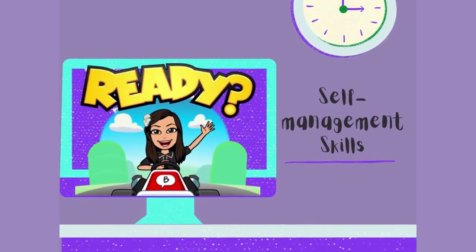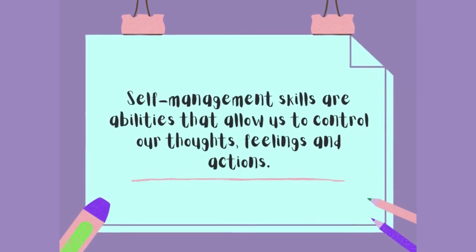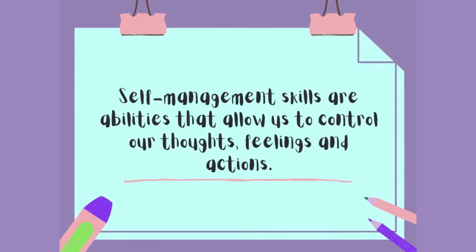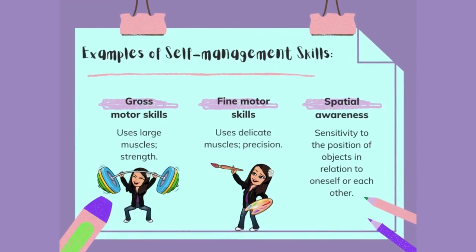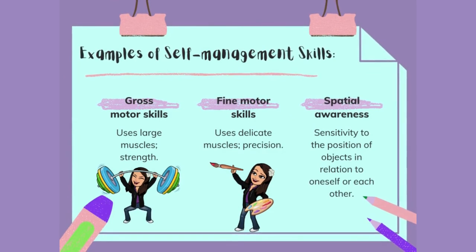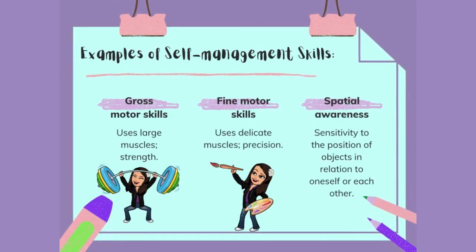Self-management skills are abilities that allow us to control our thoughts, our feelings, and our actions. Examples of self-management skills include gross motor skills, in which we use our large muscles and this involves a lot of strength; fine motor skills, in which we use delicate muscles and this centers around precision; and spatial awareness, which is sensitivity to the position of objects in relation to oneself or in relation to each other.